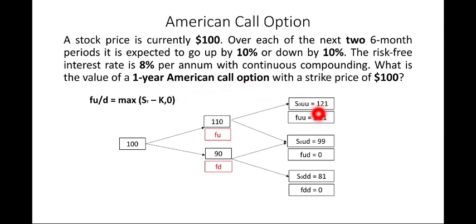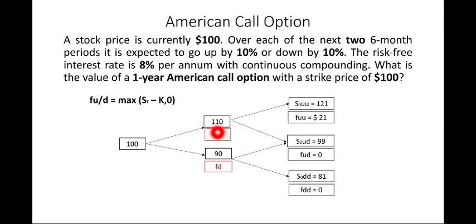For an American option, which can be exercised on or before the date of maturity, we solve the problem node by node. The nodes are: 110, 90, and 100. The node at $110 leads to values of 21 and 0, while the node at $90 leads to values of 0 and 0. Since the node at $90 has no positive value, we only need to solve for the node at $110.